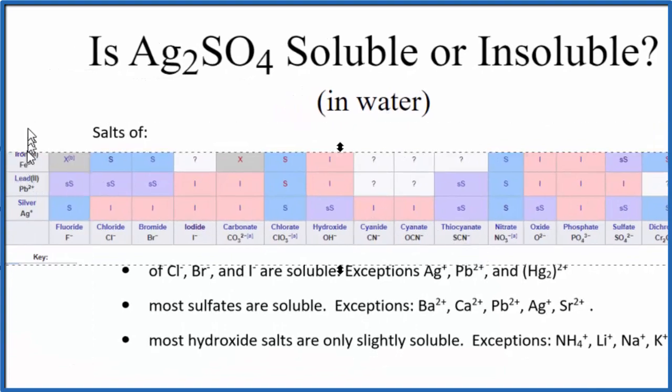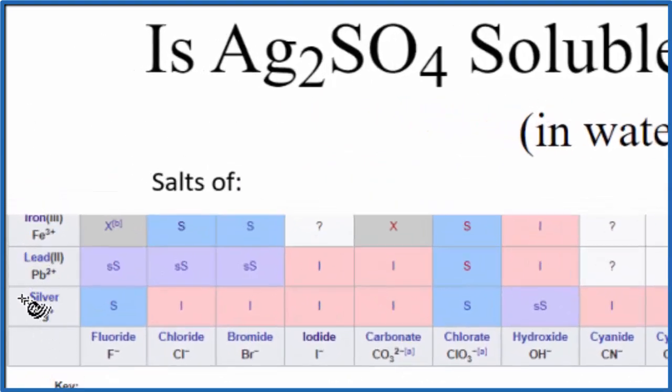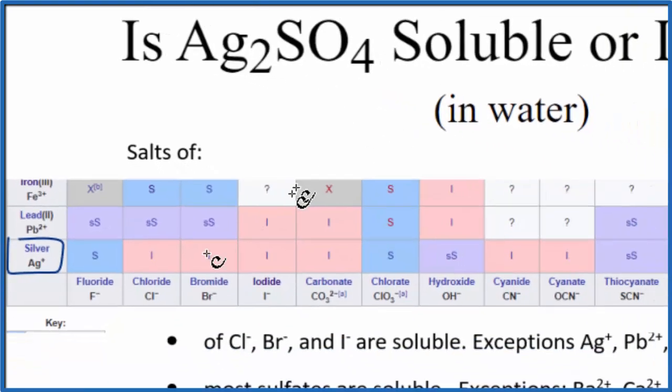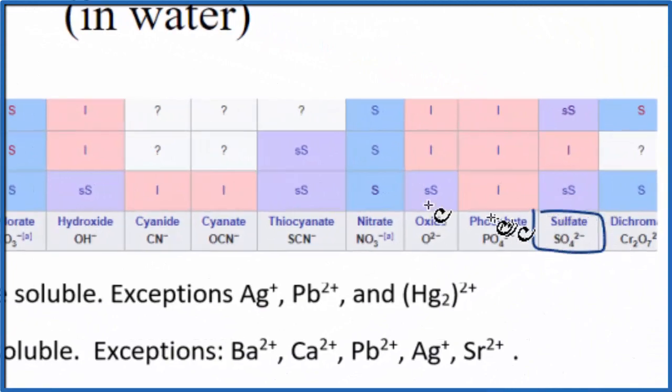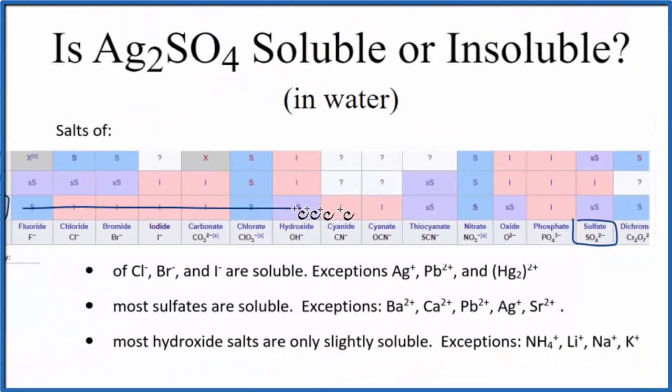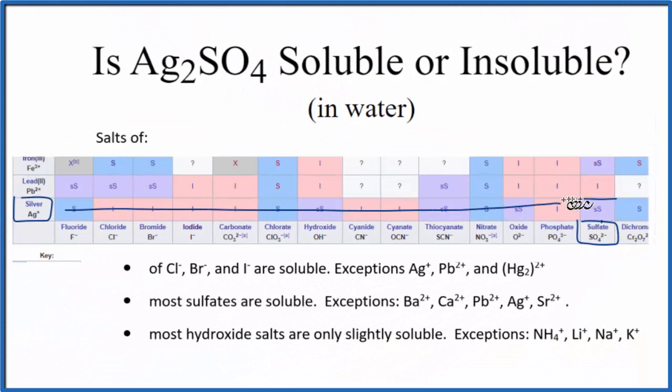And we look and find the positive ion, that's silver, right here, Ag+, and then we're looking for the sulfate. So we go over here and way over here, SO4 2-. So if we go across, and then we go up, we see that SS. SS means slightly soluble. So it's very close to insoluble.